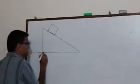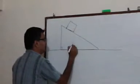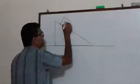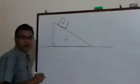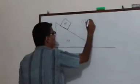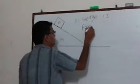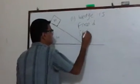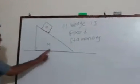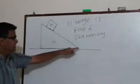All the surfaces are frictionless — there is no friction, this surface is smooth. This is a wedge of mass capital M and this is a small block of mass m. Let us consider the first case where the wedge is fixed — it is not moving, it is stationary. When the wedge is fixed, the block is only going to slide down in the downward direction.